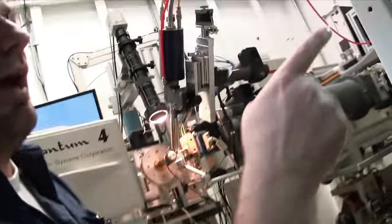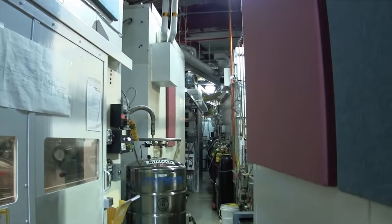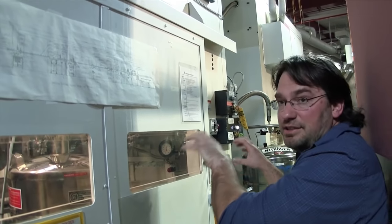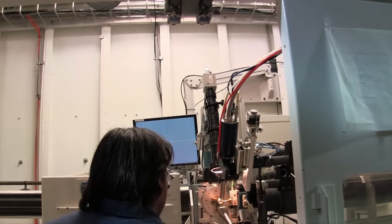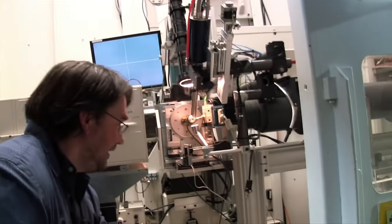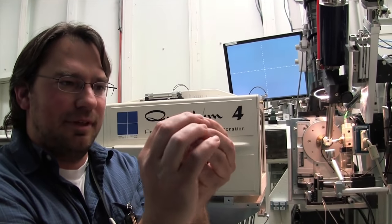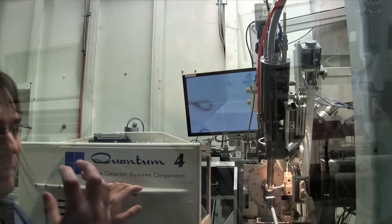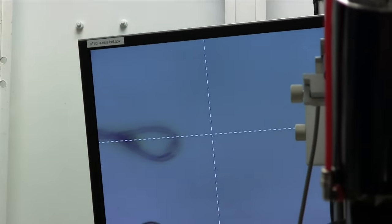The x-rays come out of the synchrotron and they travel down this beam pipe. We use various instruments to focus and steer the x-rays all the way down until they get to here. And then in here, we have our biological samples mounted on the ends of these pins.